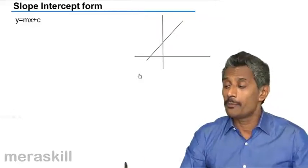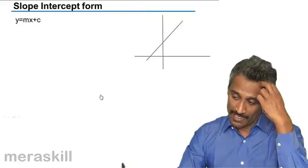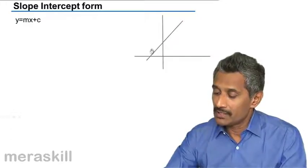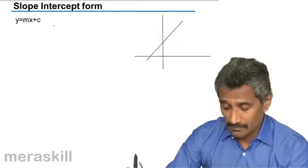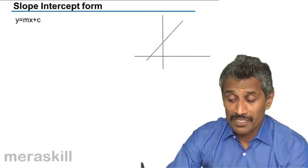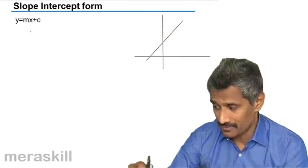We have the slope-intercept form of a line. Let's take this particular example where y is equal to mx plus c, which means m is the slope and c is the y-intercept.